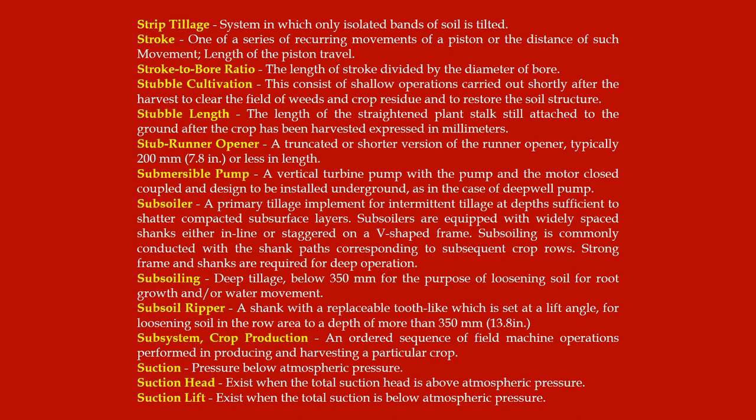Subsoiling: deep tillage below 350 mm for the purpose of loosening soil for root growth and/or water movement. Subsoil ripper: a shank with a replaceable tooth set at a lift angle for loosening soil in the row area to a depth of more than 350 mm (13.8 inches).